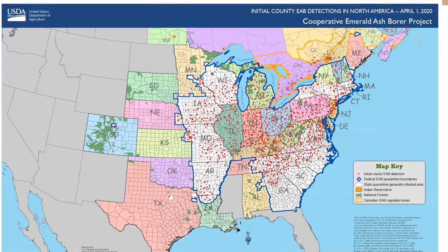I received a question about where emerald ash borer is now. Based on April 1st data, it's in most of eastern North America, with the exception of Mississippi and Florida. It's spread to isolated areas in Colorado and is in the eastern parts of Kansas, Nebraska, South Dakota, Oklahoma, and Texas as well.